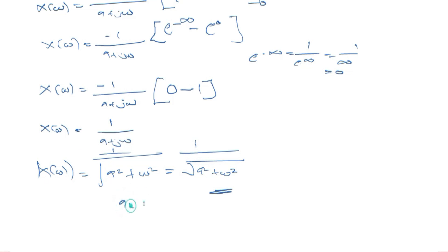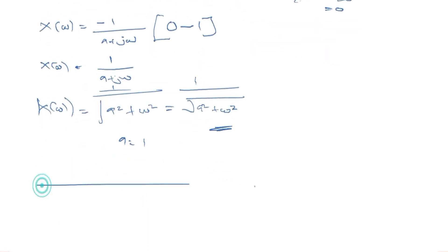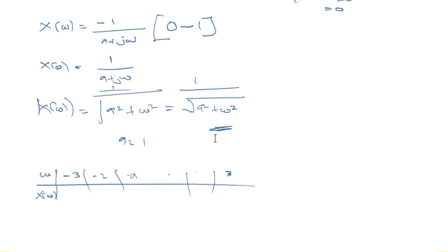We are going to assume a equals one, just as in our previous tutorial where we assumed values equal to one. We are going to assume a value for omega and plot X of omega. Draw a table with omega in one column and X of omega in the other. You can start from minus three, minus two, minus one, zero, one, two, three — it depends on the scale you want. When omega is one and a is one, you get one over the square root of one squared plus one squared, which gives one over root two.